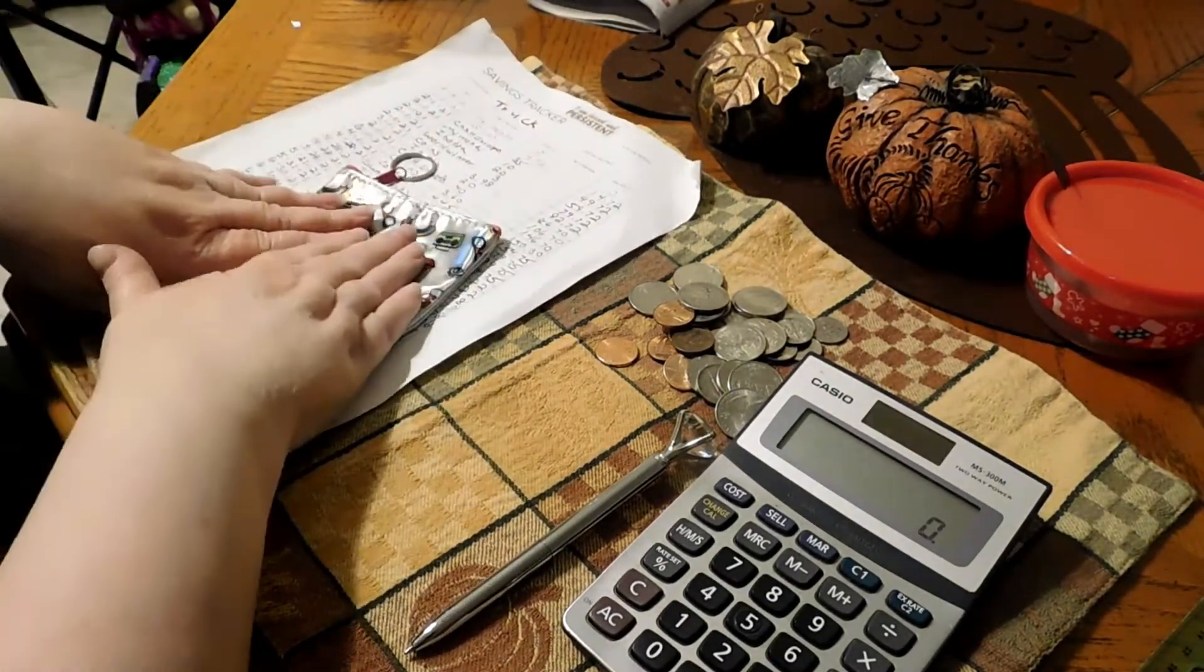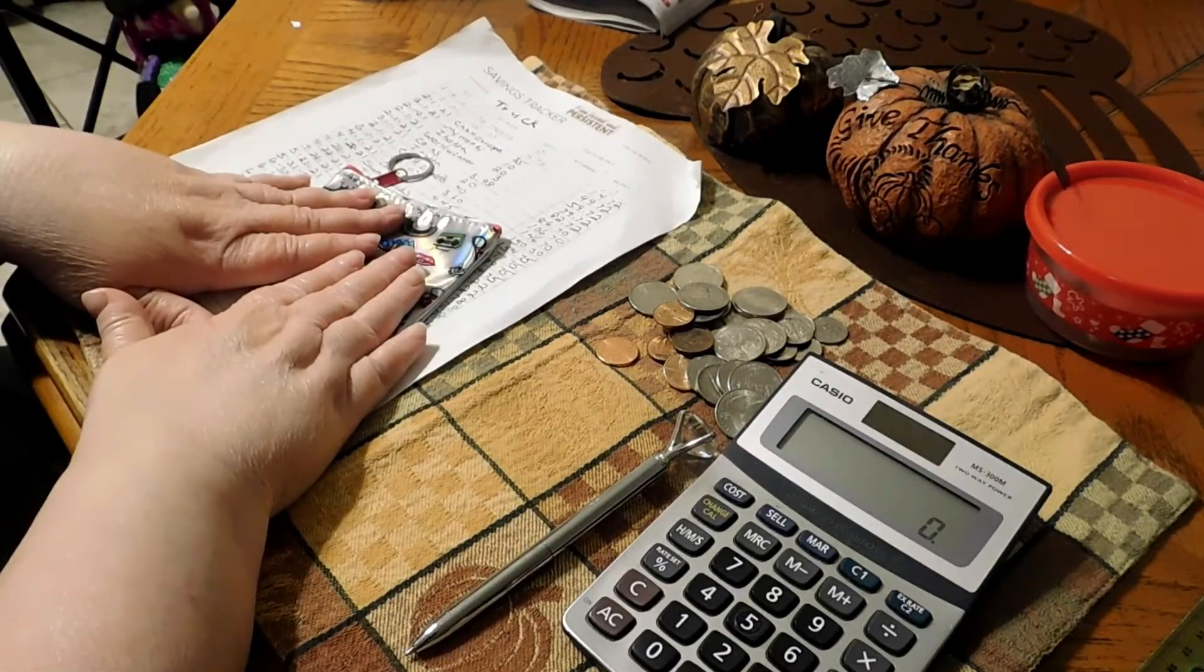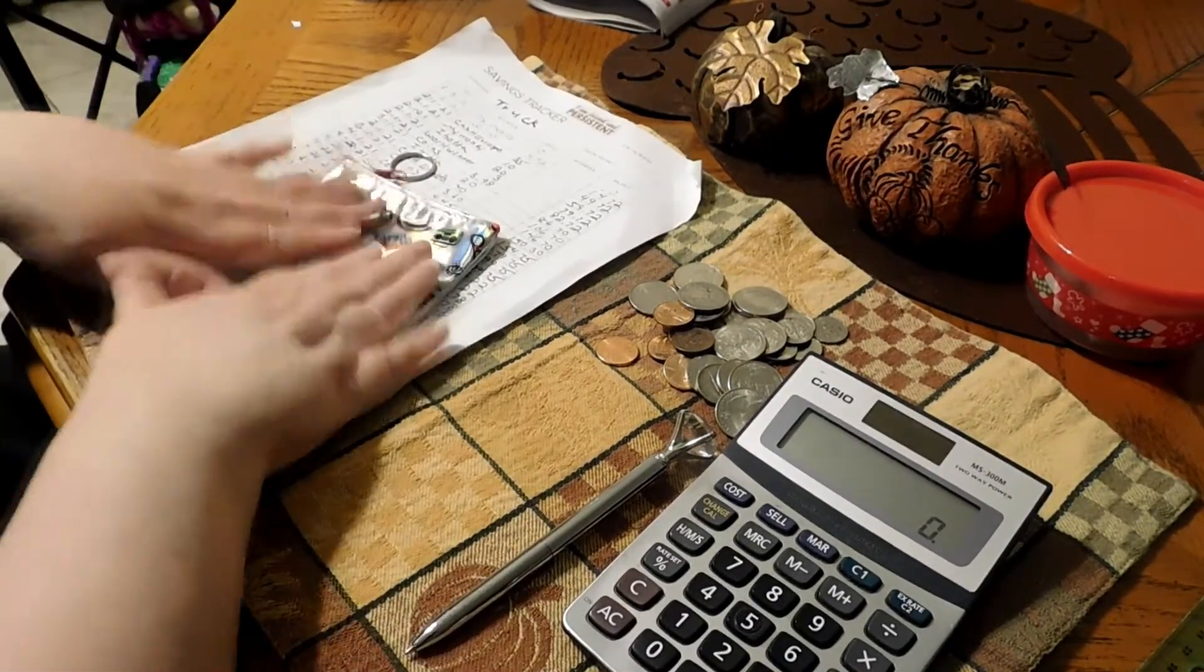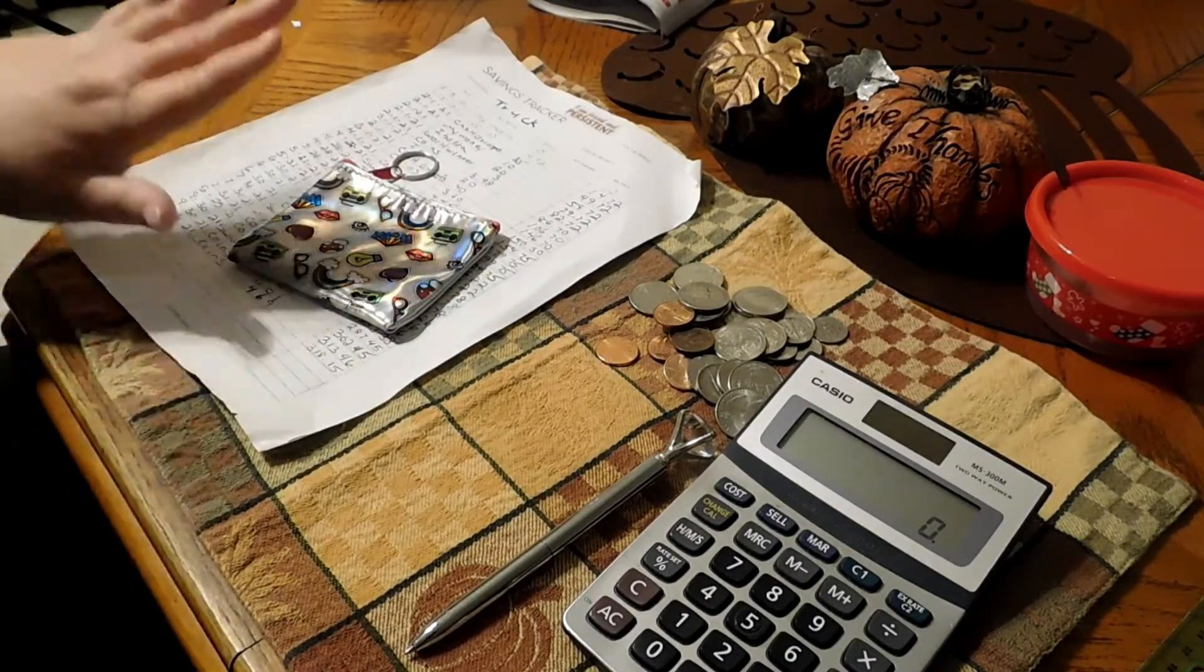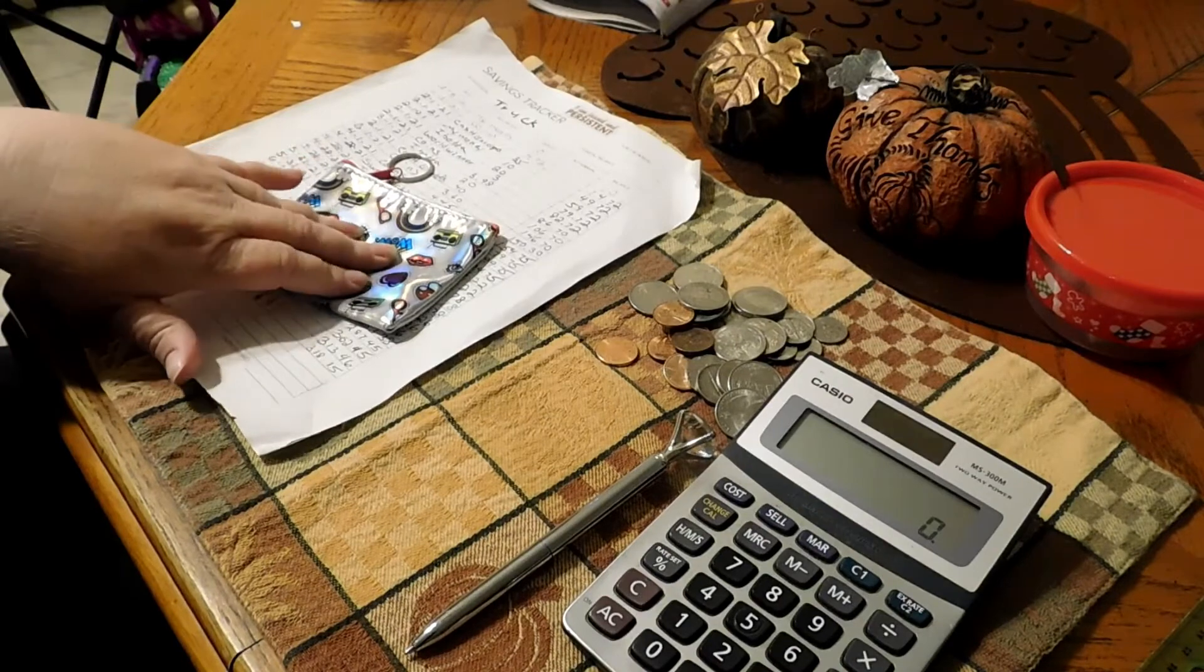In January, I'll be upping this and leaving five dollars in there at all times. So we're still going to stick with the three dollars for November and December and then in January, we're going to up this to put in five dollars in here.